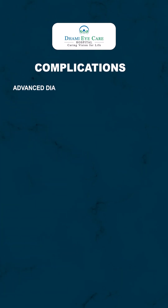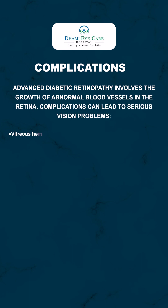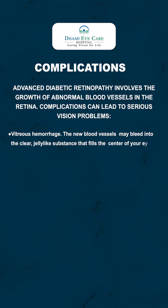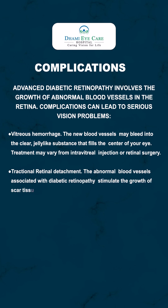Advanced diabetic retinopathy involves the growth of abnormal blood vessels in the retina. Complications can lead to serious vision problems like vitreous hemorrhage, where the new blood vessels may bleed into the clear, jelly-like substance that fills the center of your eye. Treatment may vary from intravitreal injection or retinal surgery. In tractional retinal detachment, the abnormal blood vessels stimulate the growth of scar tissue, which can pull the retina away from the back of the eye.